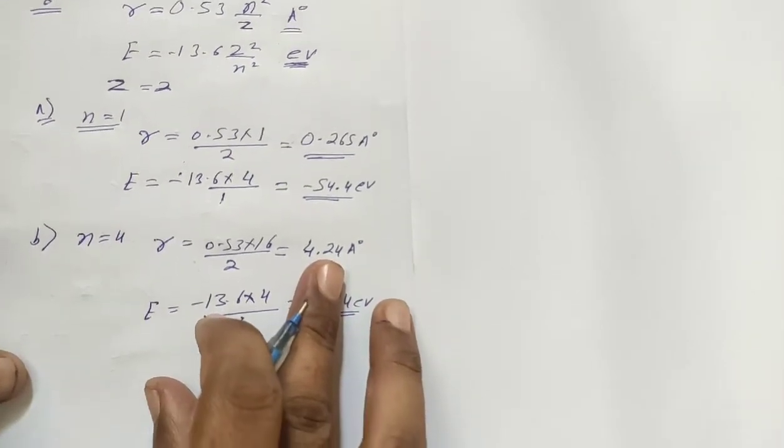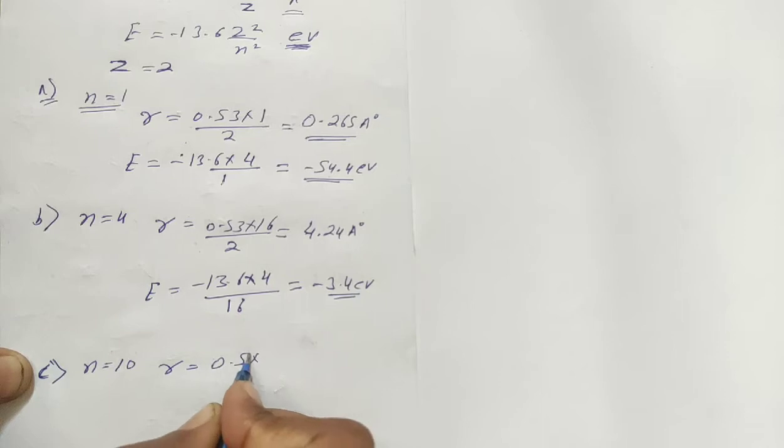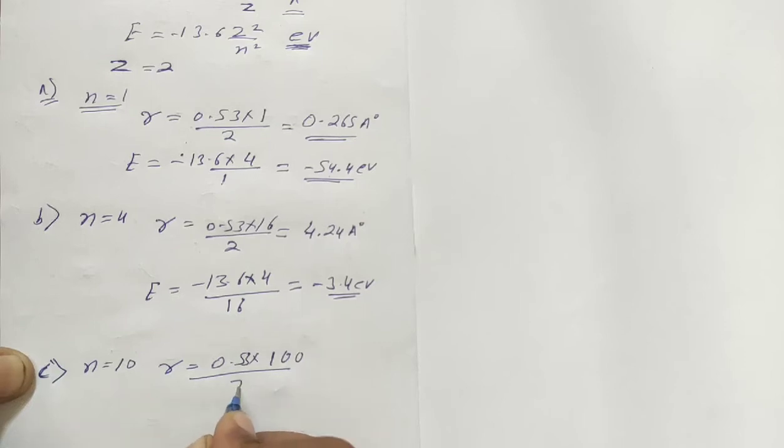Next, for the third part, part C, n is given as 10. Radius equals 0.53 times n squared, which is 100, upon z equals 2.